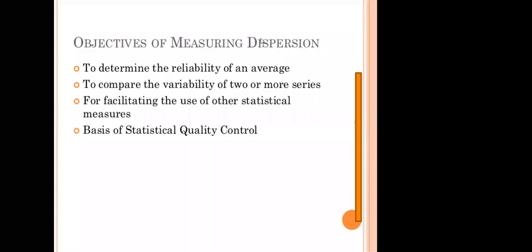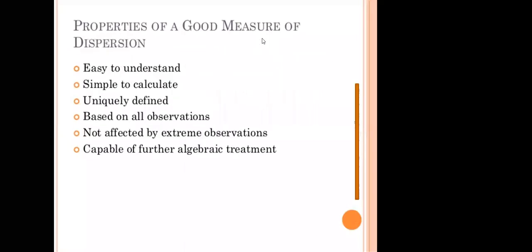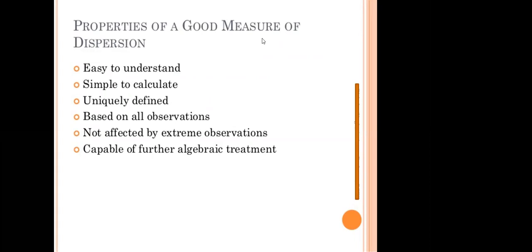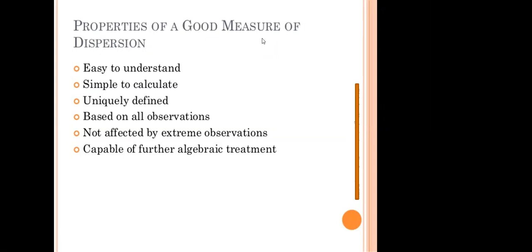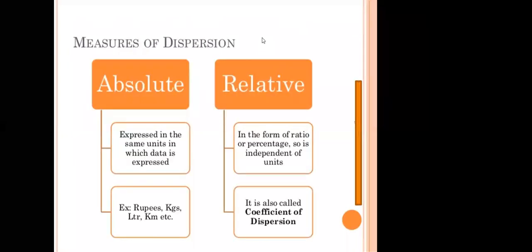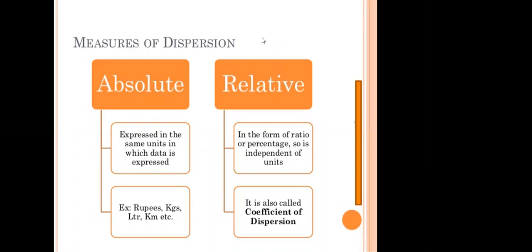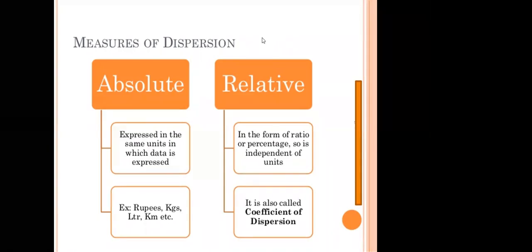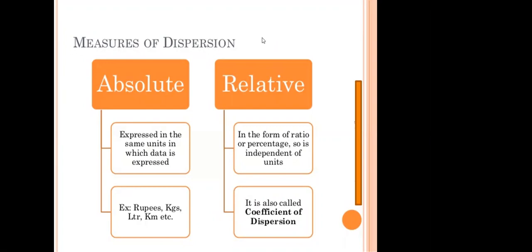Now some properties of a good measure of dispersion. A good measure of dispersion should be helpful in finding out the variation. It should be easy to understand and simple to calculate. It should be uniquely defined and based on all observed values. It should not be unduly affected by extreme items. It should be capable of further algebraic treatment. The measure of dispersion can be classified into two types: absolute and relative measure of dispersion.